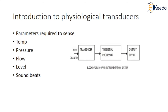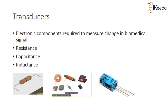These biomedical signals from different parts of our body are further processed by a signal processor and then transferred to output peripherals such as visual monitoring, audio indication, Wi-Fi, Bluetooth, and internet connectivity for remote operations. The changes in the measured biosignals can be detected by variation in electronic circuit parameters like resistance, capacitance, and inductance.